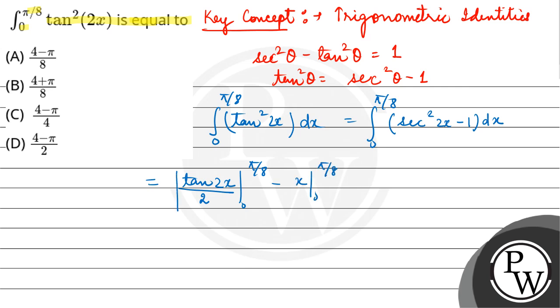So this comes out to be tan pi by 4, which is pi by 4, minus pi by 8. Now tan pi by 4 is 1, so 1 by 2 minus pi by 8, that is...